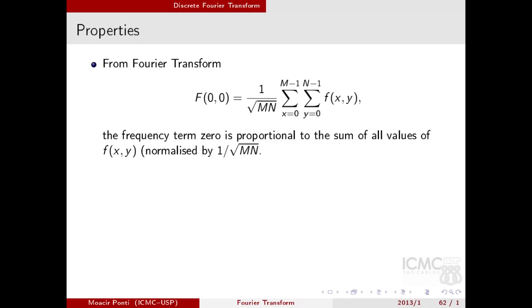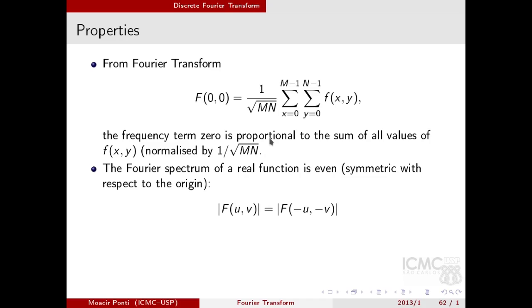There are some important things here that you can notice. For example, the first term for the Fourier transform is F, in which u is 0 and v is also 0. Because both are 0 and e to the power of 0 is 1, it will give me a term that is proportional to the sum of all values of x and y normalized by 1 over square root of MN. Another important property is that the Fourier spectrum of a real function is even, symmetric with respect to the origin.